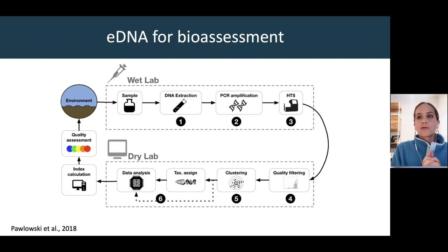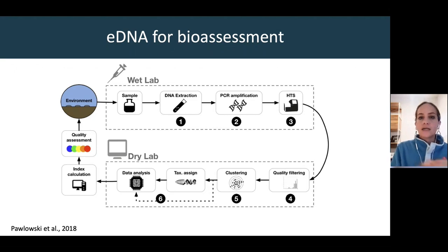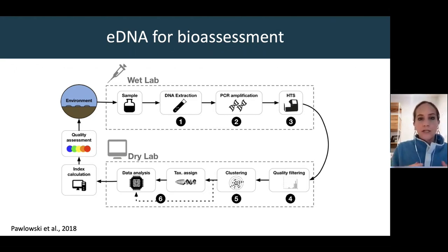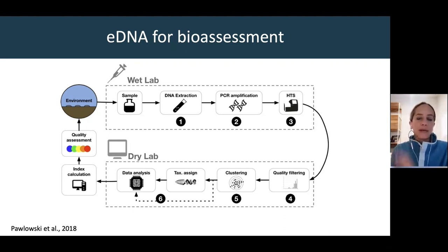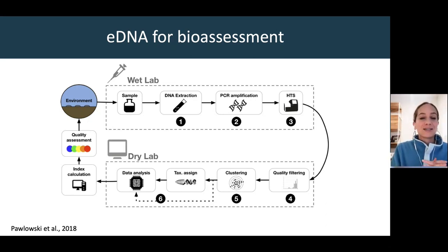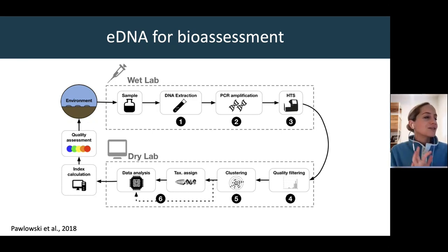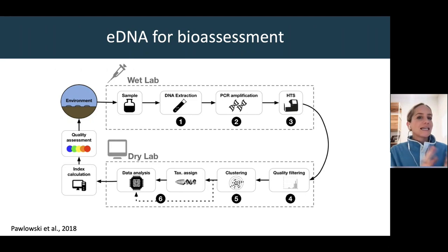Most folks are turning towards DNA metabarcode sequencing approaches because it allows surveying the whole community of organisms present — whether benthic macroinvertebrates, benthic algae, fish, or all of the above. You can even include prokaryotic communities such as bacteria in multitrophic approaches, which is a novel characteristic of DNA-based approaches, giving us access to information we didn't have before.